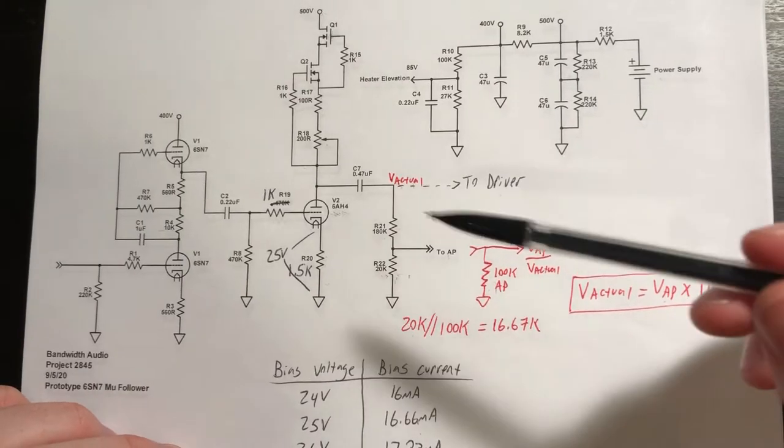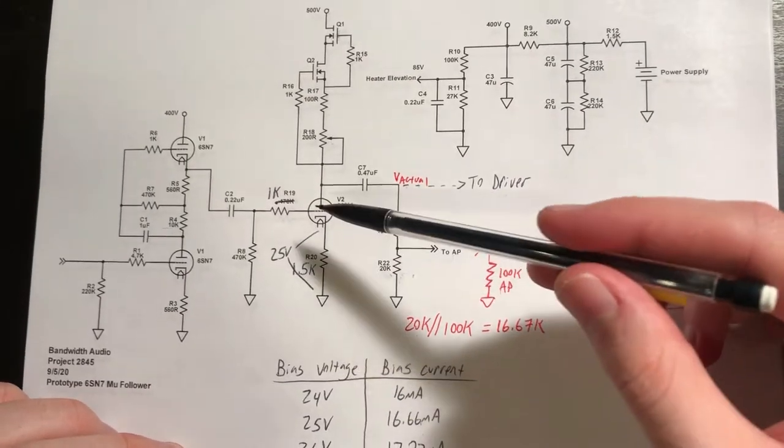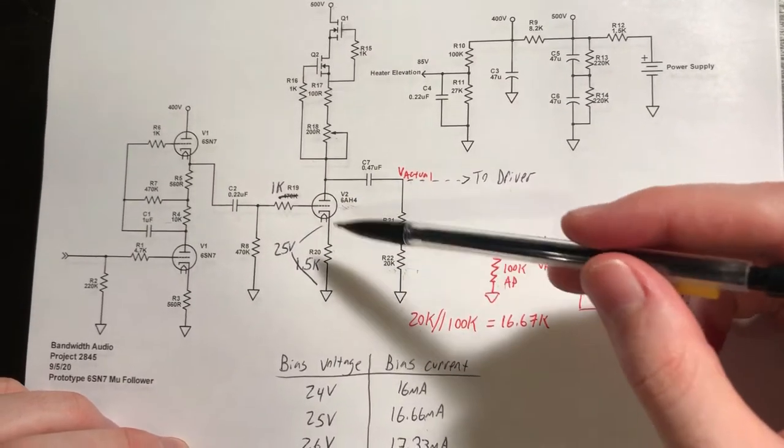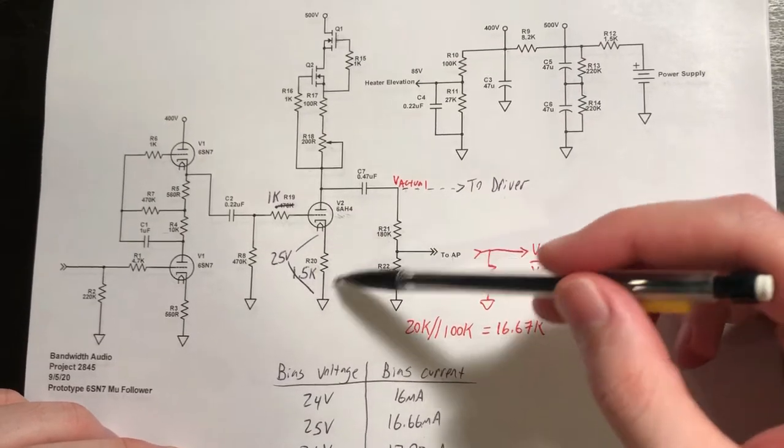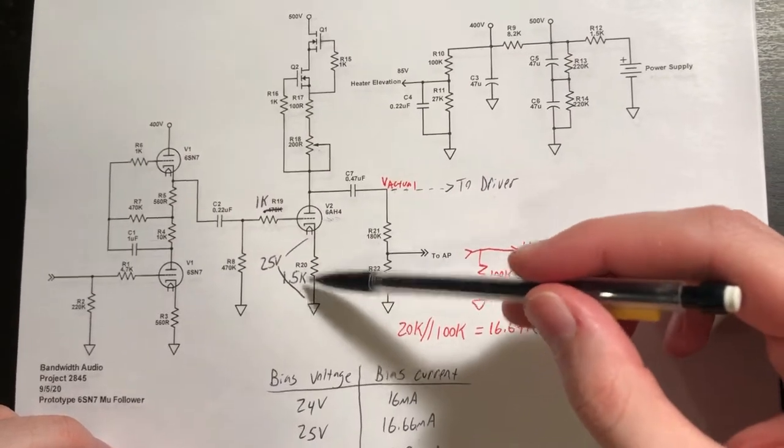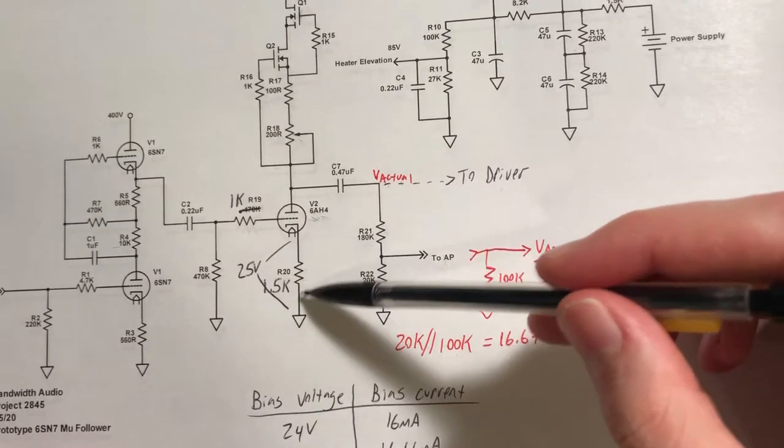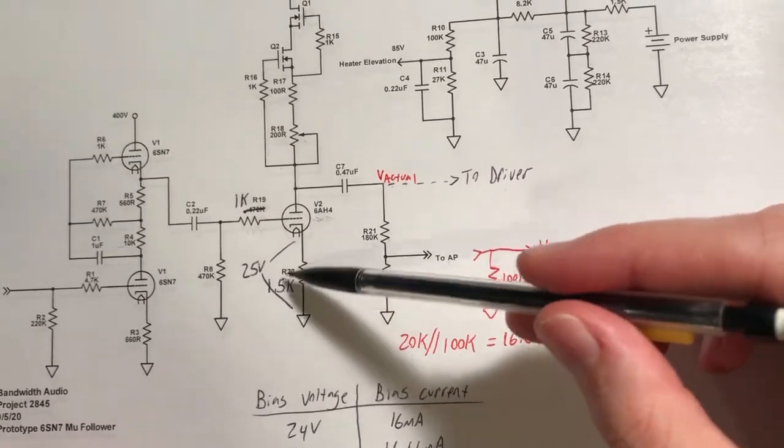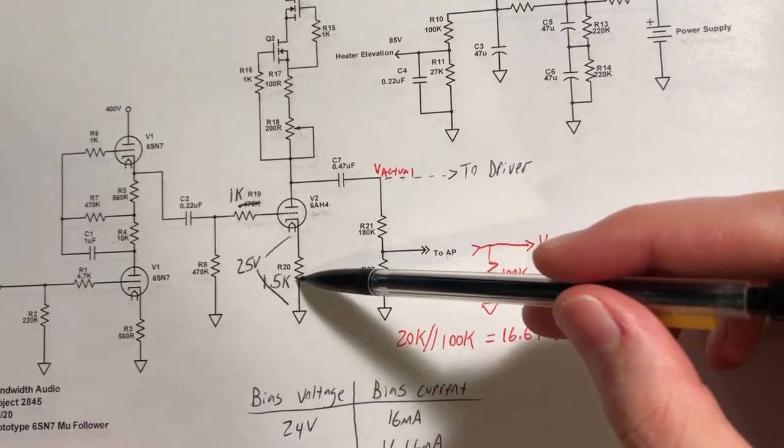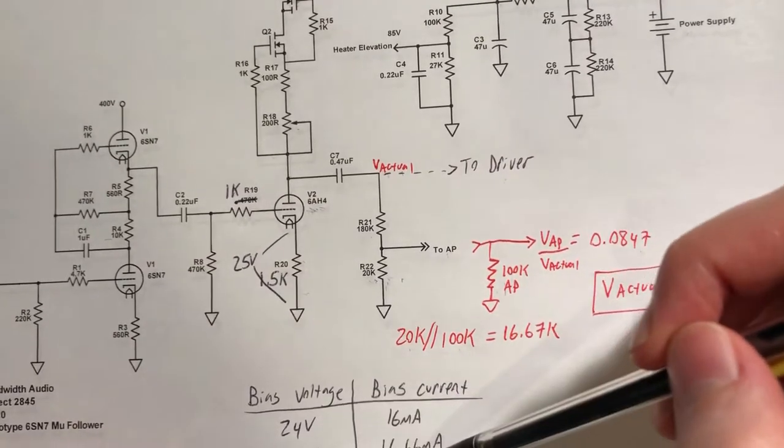I will caveat this that I've actually already experimented with a couple of values. Primarily, I've been playing around with this cathode resistor on the 6AH4 to center the operating point of this tube for our 15 milliamp supply.